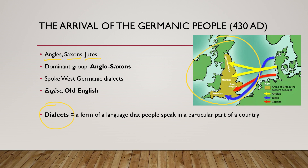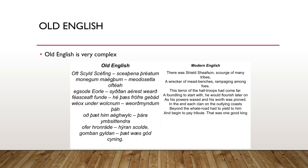Old English is a very complex language. Nouns had three genders. There were seven classes of strong verbs and three classes of weak verbs, and their endings changed for number, tense, mood, and person. Adjectives could have up to 11 forms. You can obviously see how different Old English and Modern English are from this photo.